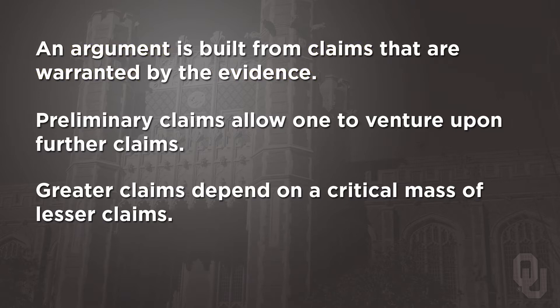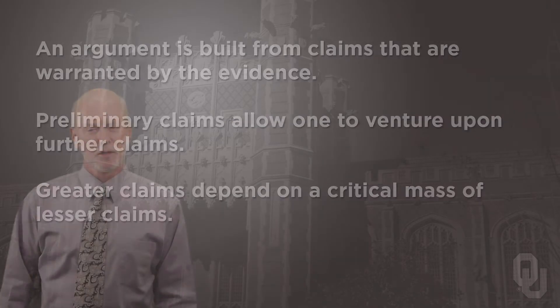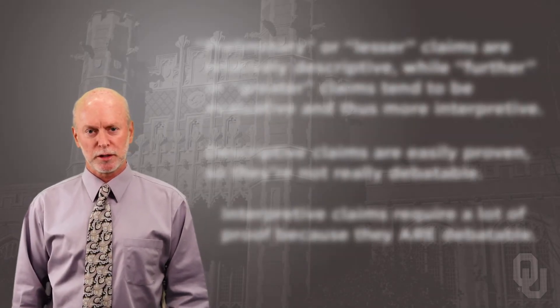The other two statements are purposely redundant — they say much the same thing in different words. It's worth saying twice, because this is where we arrive at a distinction that you need to be able to make when you build an argument. Preliminary claims allow one to venture upon further claims; greater claims depend on a critical mass — a sufficient number — of lesser claims. With a sufficient number of lesser or preliminary claims, you're ready to put forward some further and greater, more challenging claims. Let's bring the distinction between different sorts of claims into sharper focus.